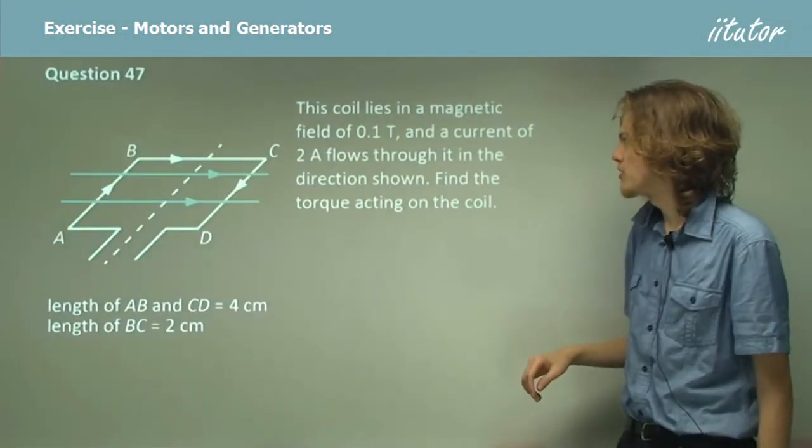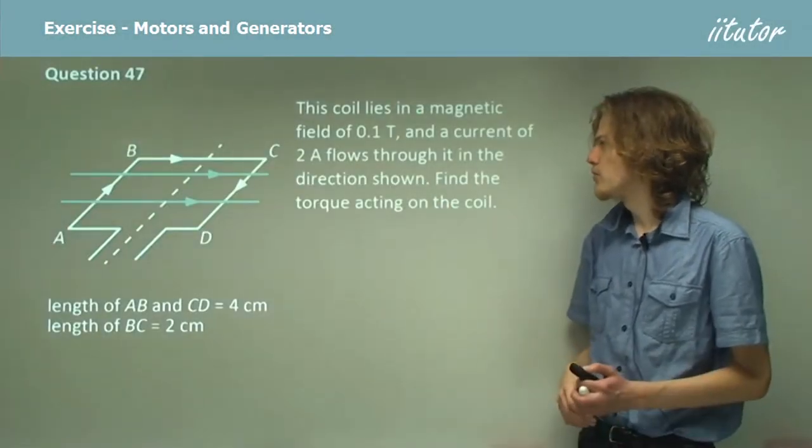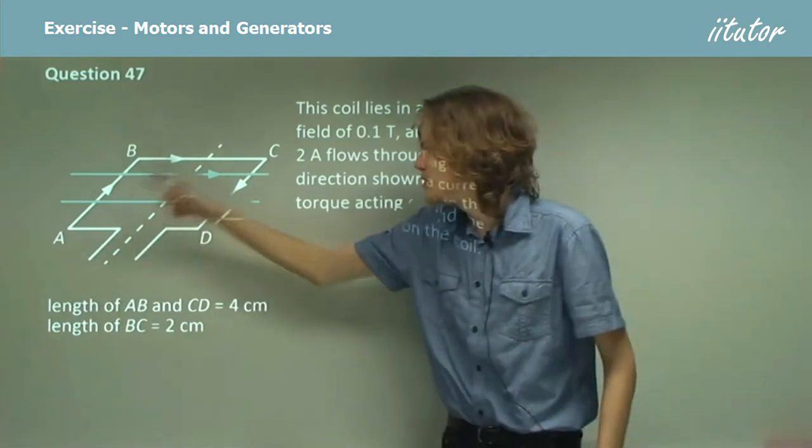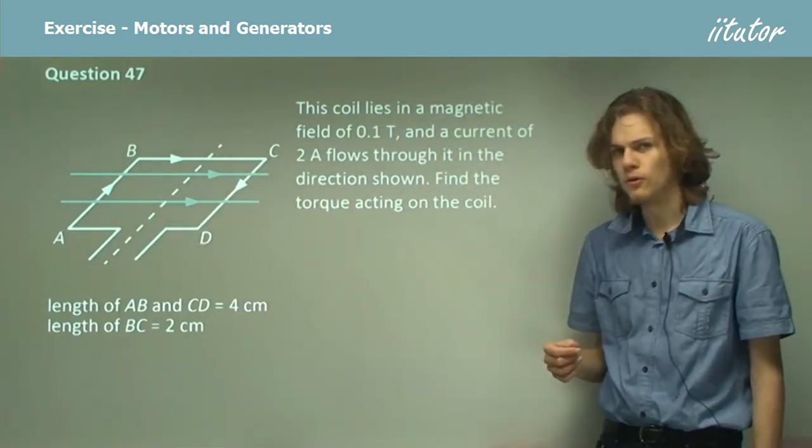This coil lies in a magnetic field of 0.1 tesla and a current of 2 amps flows through it in the direction shown, ABCD. Find the torque acting on the coil.